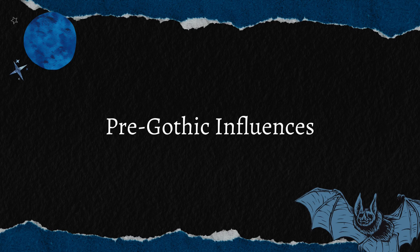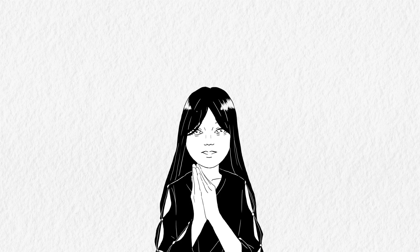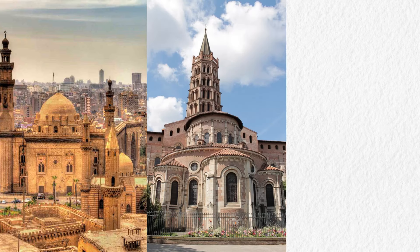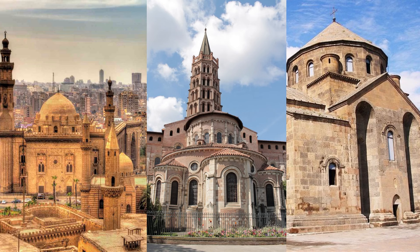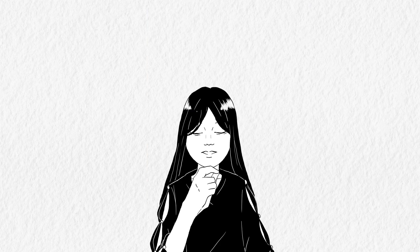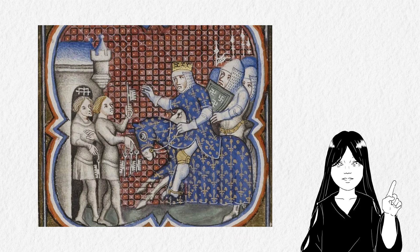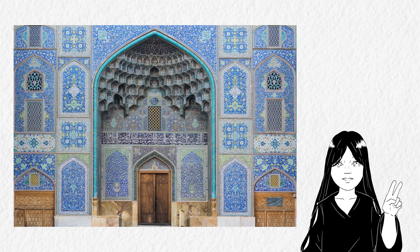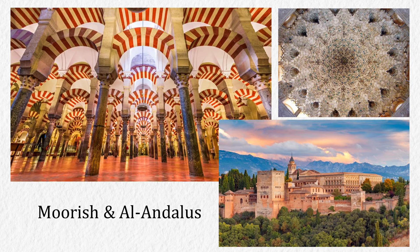Pre-Gothic Influences: three main influences are Islamic, Romanesque, and Armenian architecture. Let's start with the Islamic influence, the most prominent one. There are several ways Islamic culture could have been introduced to France. One comes from the Crusaders, who introduced architectural ideas from the Middle East to Europe. Another way could be from Islamic architecture during the Muslim Empire's rule in Spain — more specifically, Moorish architecture from Al-Andalus may have impacted the origins of the Gothic style.